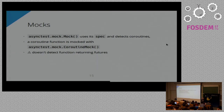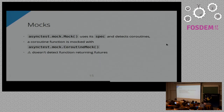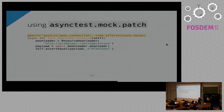One drawback is an anti-pattern I see where people claim to provide a coroutine in their API, but it's actually just a function returning a Future — it works the same way in your code, but the function is not actually a coroutine. When you try to mock it, you'd expect it to work smoothly, but it will not. One famous example is aiohttp, which used to do that a lot, making mocking quite hard.